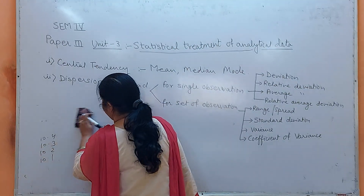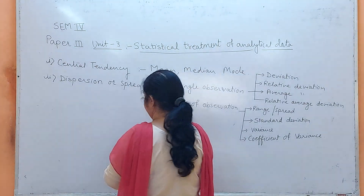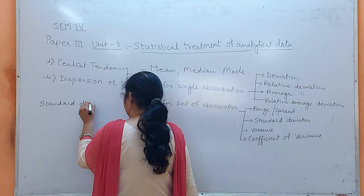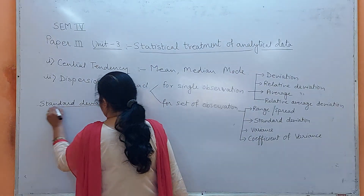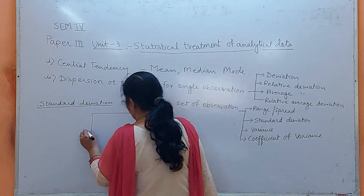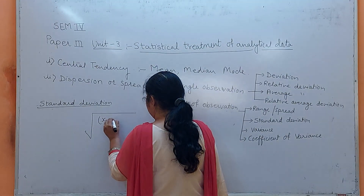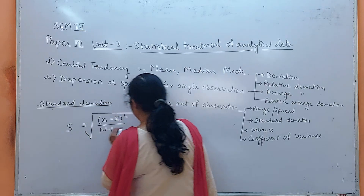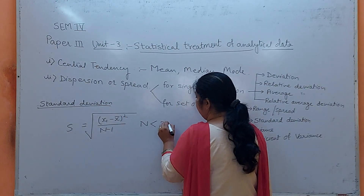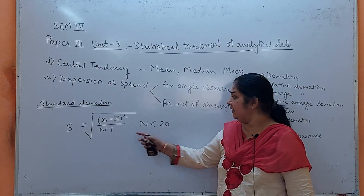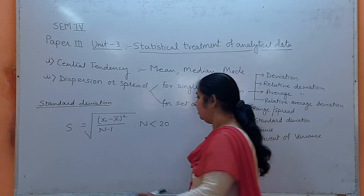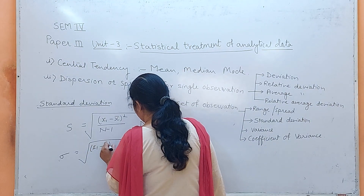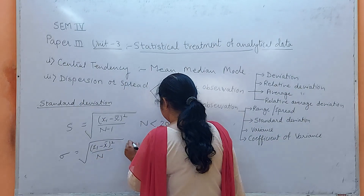Next is standard deviation. It is given by the formula: square root of [summation of (xi minus x̄) squared divided by (n minus 1)] when n is less than 20 — meaning fewer than 20 observations. If n is greater than 20, the formula becomes: square root of [summation of (xi minus x̄) squared divided by n].